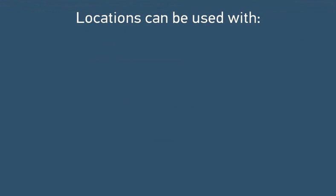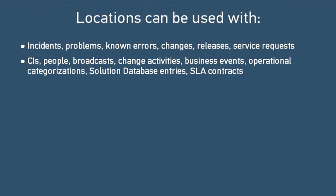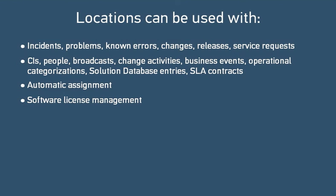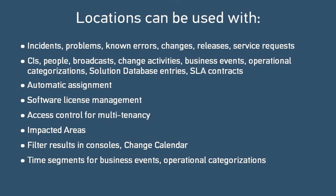Before looking at configuring location structures, let's review the ways that they're used in ITSM, SLM, and SRM. You can specify a location for various ITSM requests, SRM service requests, CIs, people, and several other types of objects in ITSM and SLM. The location of a request can help determine its automatic assignment to a support group or person. The location of a software CI can help attach it to a software license certificate. The location company of a request or CI determines who has access to it in a multi-tenant environment. Additional locations can be related to a request or CI to show other areas that it impacts. Location can filter the records displayed in ITSM consoles and in the change calendar. You can apply a location to a business event or operational categorization for more accurate scheduling of changes and releases with the Schedule Assist tool, and you can include a location in the criteria that match requests to a service target.